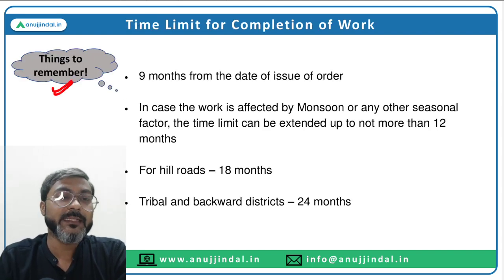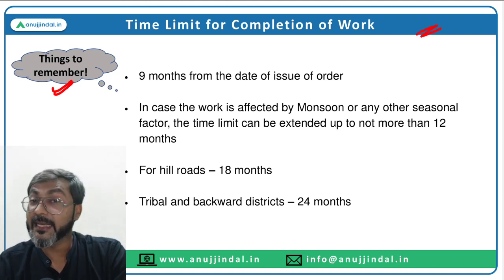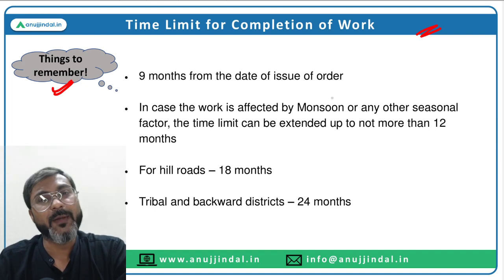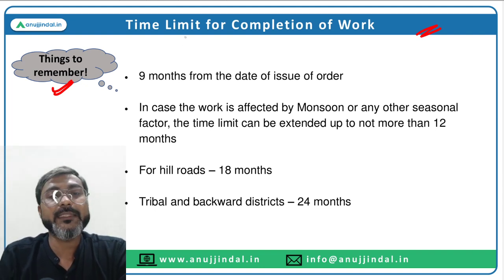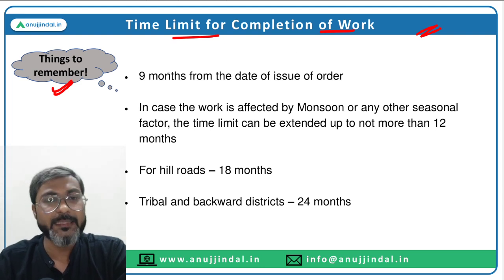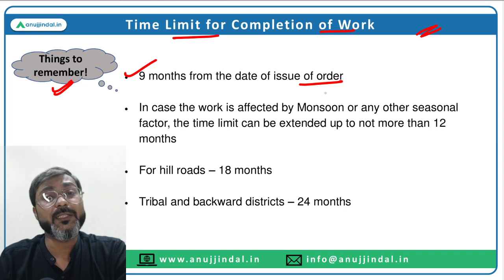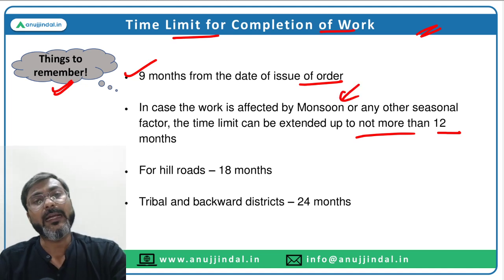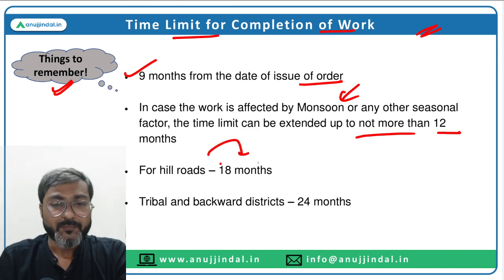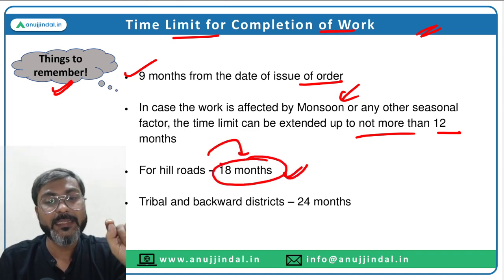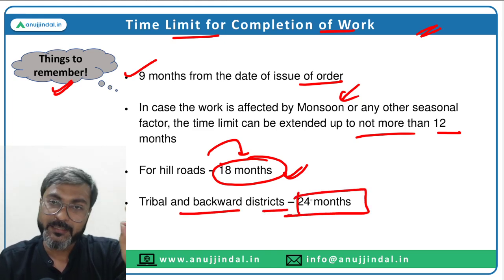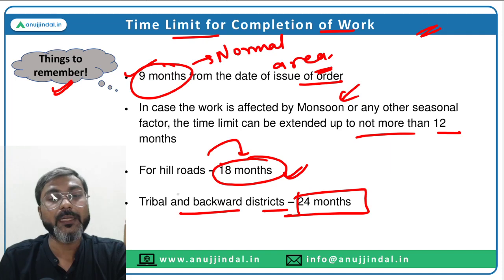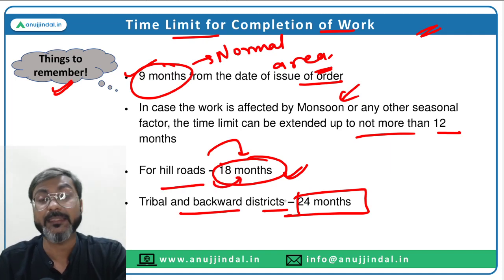Regarding the time limit for completion of work: in normal circumstances it is nine months from the date of issue of order. This can be extended up to not more than 12 months if work is affected by monsoon or any other seasonal factor. For hill roads, the normal time is 18 months, while for tribal and backward districts it is 24 months.